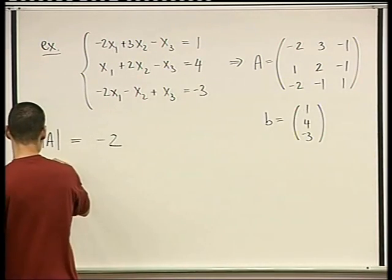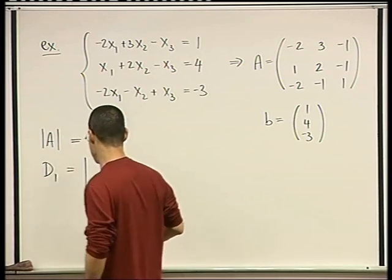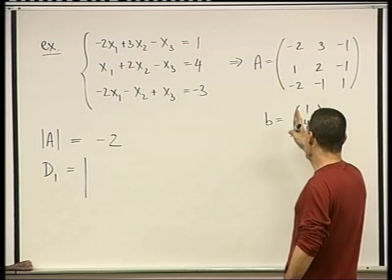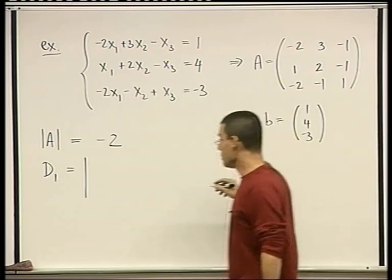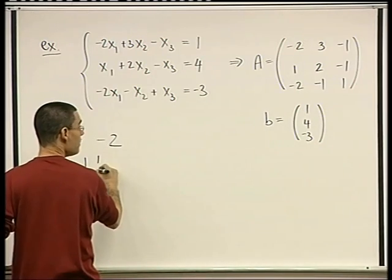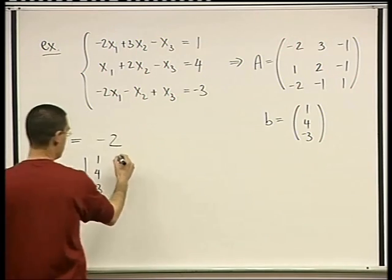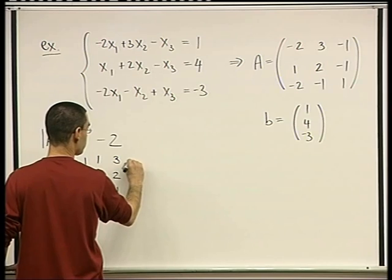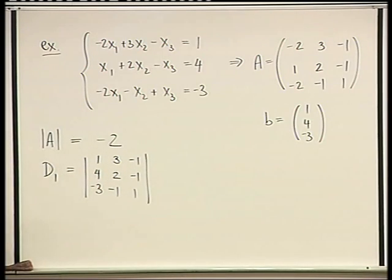And now we need to find D1, D2, and D3. So what is D1? D1 is taking A, replacing the first column of A by B. So instead of the first column, I'm going to have B here, 1, 4, negative 3. And then the other two columns are the original ones from A. D3. Do you agree that this is D1, the determinant of this matrix?